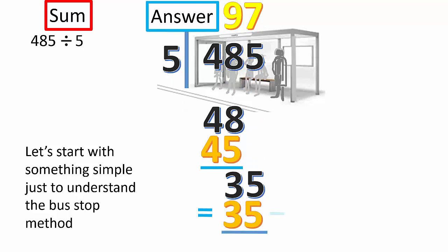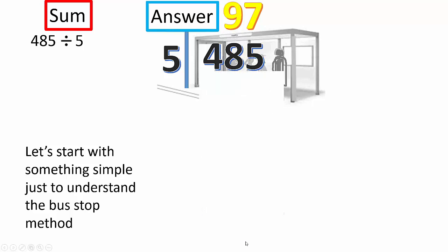So, now, if we take 5 from 5, we get 0. 3 from 3, we get 0. So, here's the answer. 5 into 485 goes 97 times.